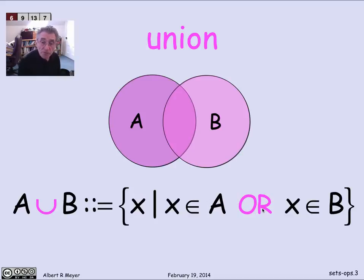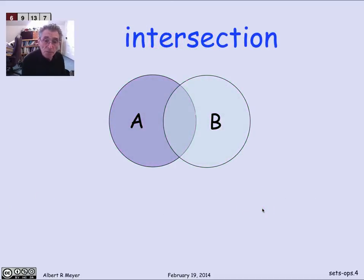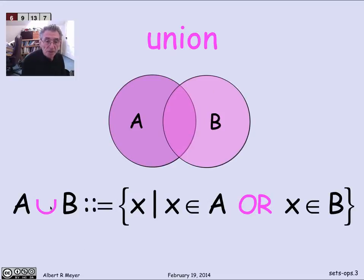But don't confuse them. If you apply OR to sets, your compiler is going to give you a type error. And if you apply union to propositional variables, your compiler is also going to give you a type error. So let's keep the propositional operators and the set theoretic operators separate and clearly distinct, even though they resemble each other.